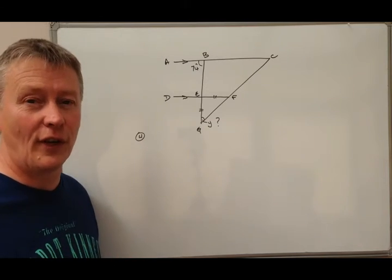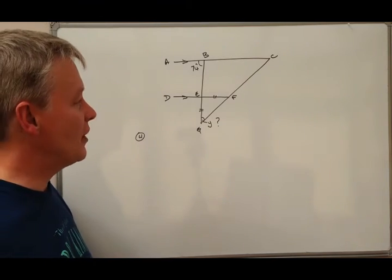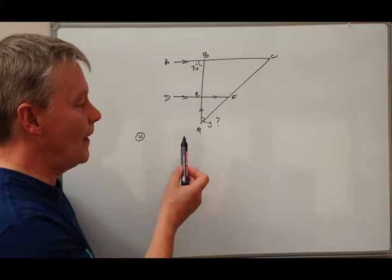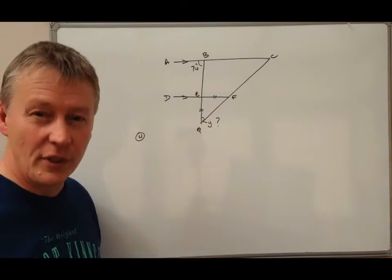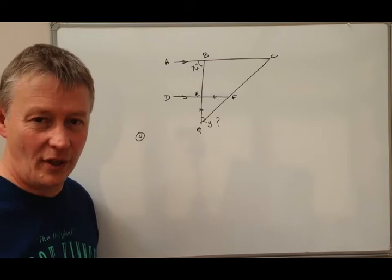The first thing to notice is that at the bottom here we've got a triangle which is actually an isosceles triangle, and the reason we know that is that this and this are the same length.